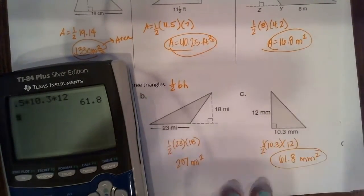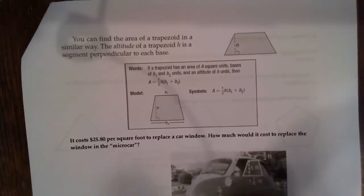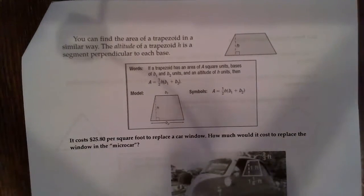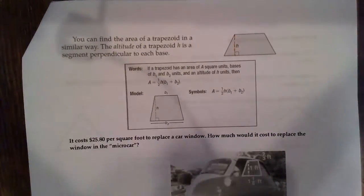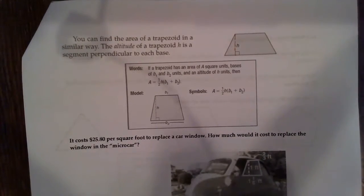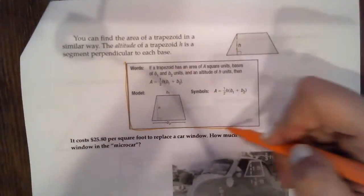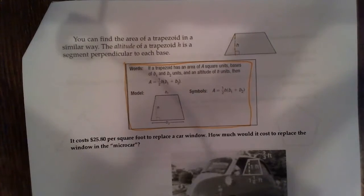Now if we go over here, we have some trapezoids. You can find the area of a trapezoid in a similar way. The altitude or height of a trapezoid is h, and it is a segment perpendicular to each base. If a trapezoid has an area of a square units, bases of base one and base two units, and an altitude of h units, then this is our formula.